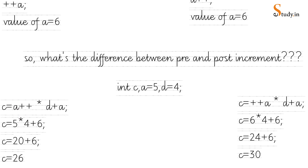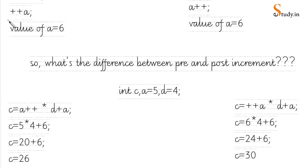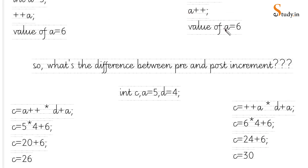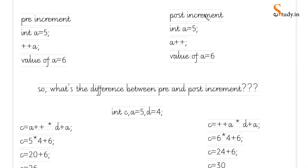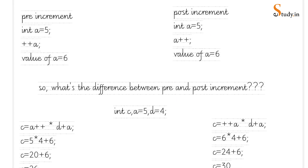So the difference between pre and post-increment is that when used in an expression they give different results, but used standalone the answer is the same. The same rule applies to pre and post-decrement. Decrement means decrease the value by one; increment means increase the value by one.